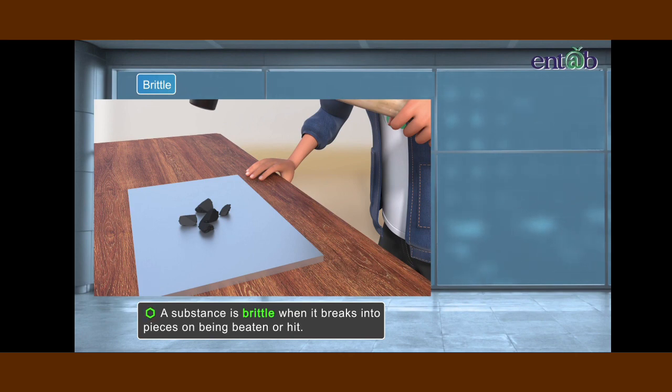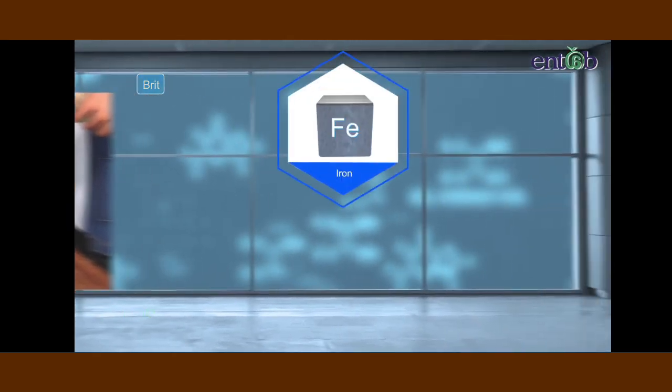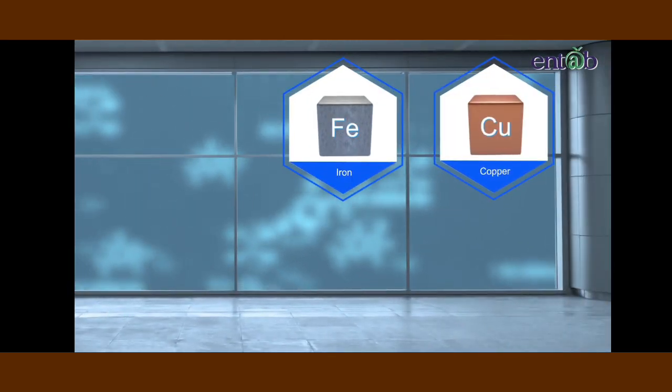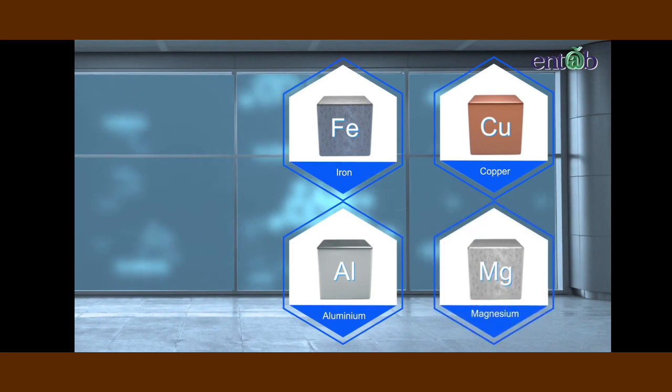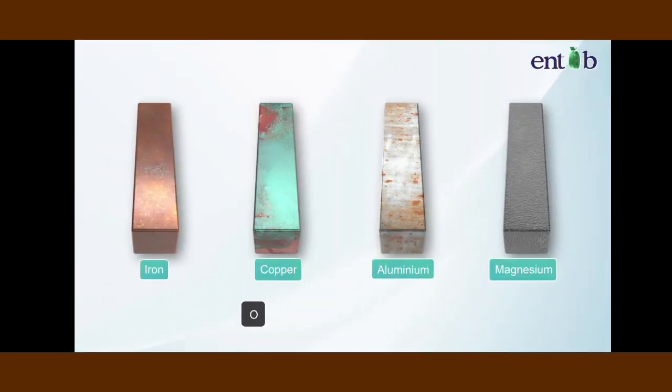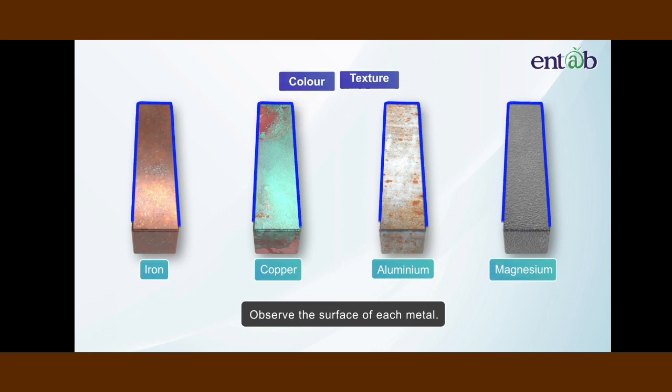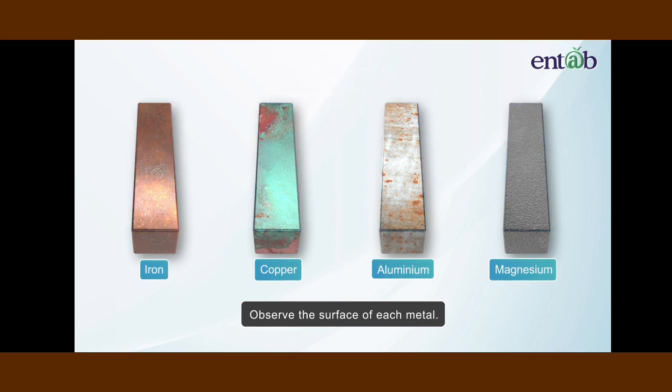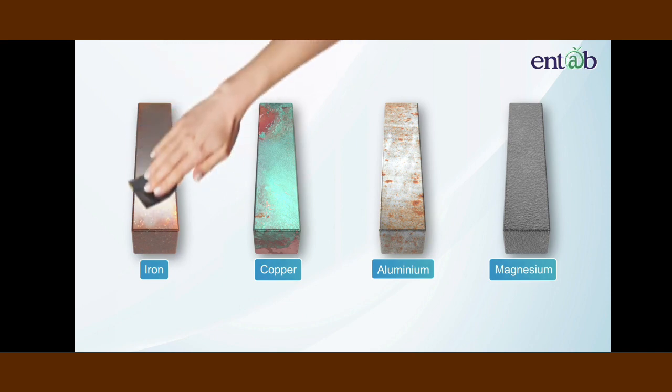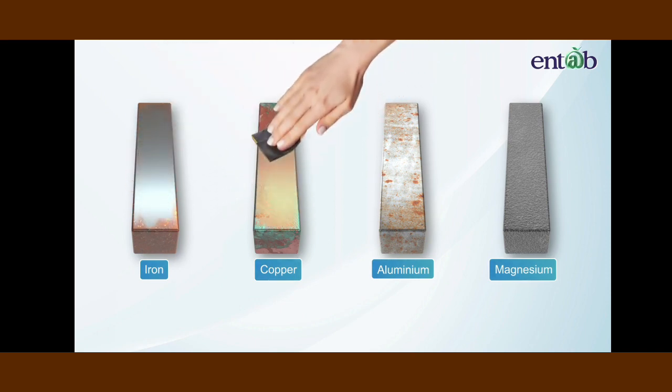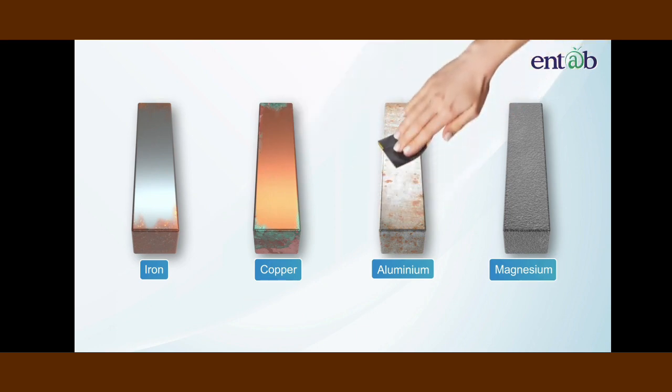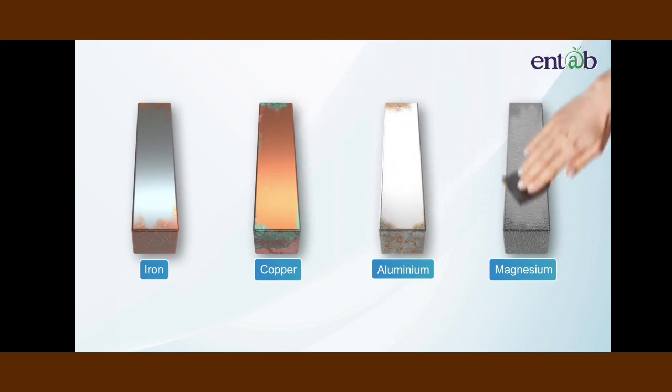Let us now try and observe some metals like iron, copper, aluminum, and magnesium. Take samples of these metals and note their appearance carefully. Observe the surface of each metal to note the color and texture of their surfaces. They have dull surfaces. Now take a small piece of sandpaper and rub each of the metal surface with it for about two to three minutes each.